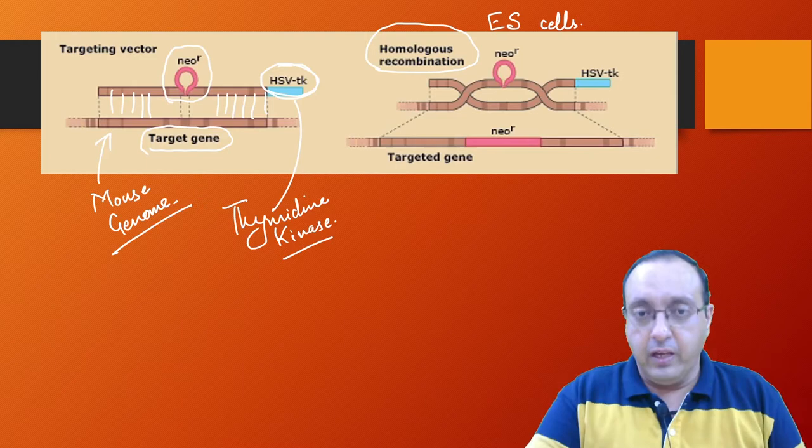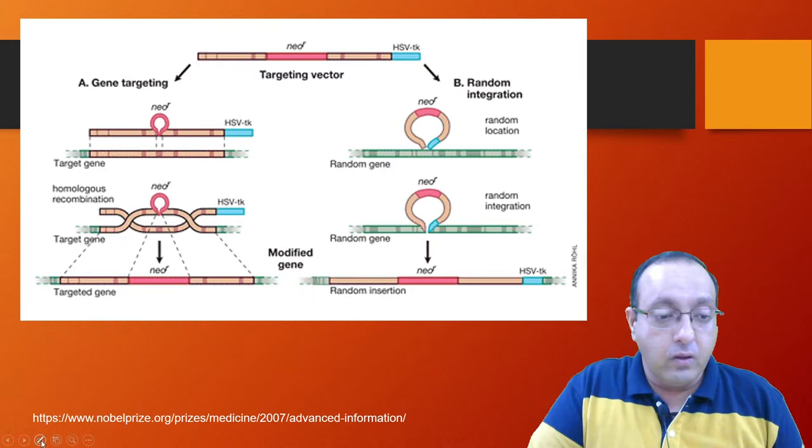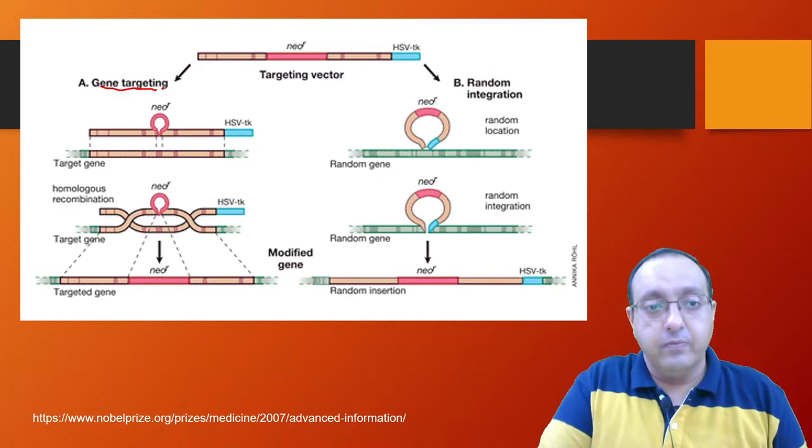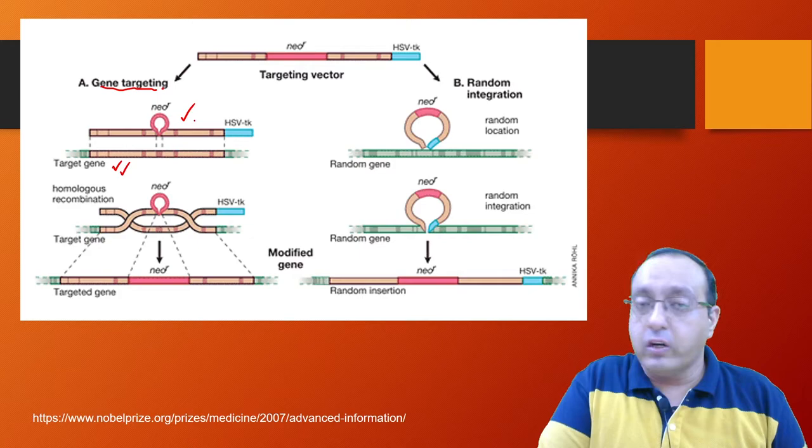Now there are two scenarios where this can happen. One scenario is the optimal required outcome, which is the exact gene targeting that we are interested in at our locus of interest. So what will happen is you have your target gene in the mouse chromosome, you have your targeting vector with the neomycin resistance gene.